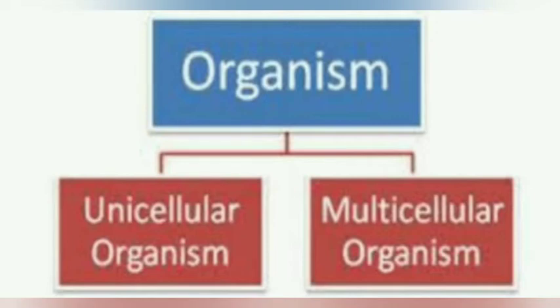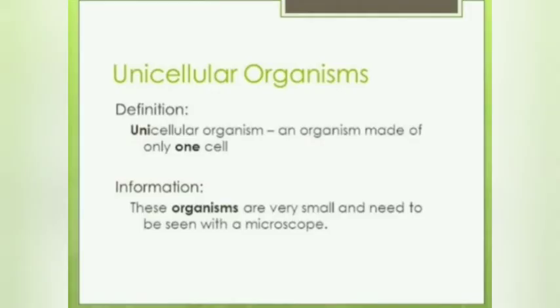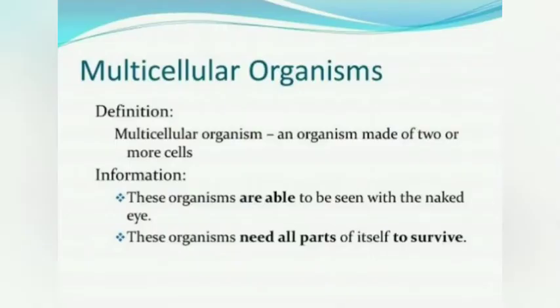What are unicellular organisms? Unicellular organisms are organisms which are made up of only one cell. These organisms are very small in size and we can see them only through a microscope.